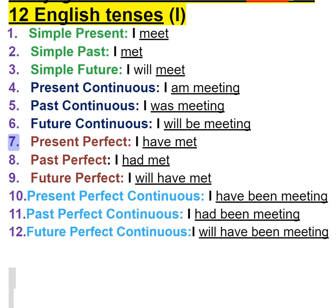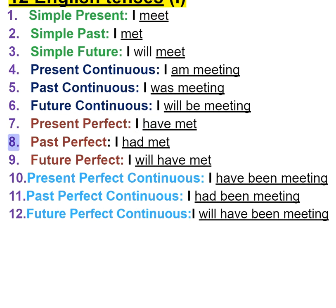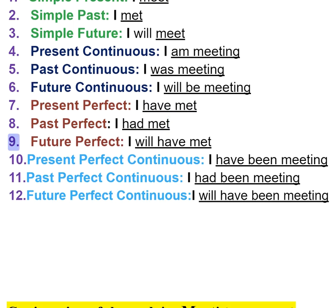7. Present perfect — I have met. 8. Past perfect — I had met. 9. Future perfect — I will have met.